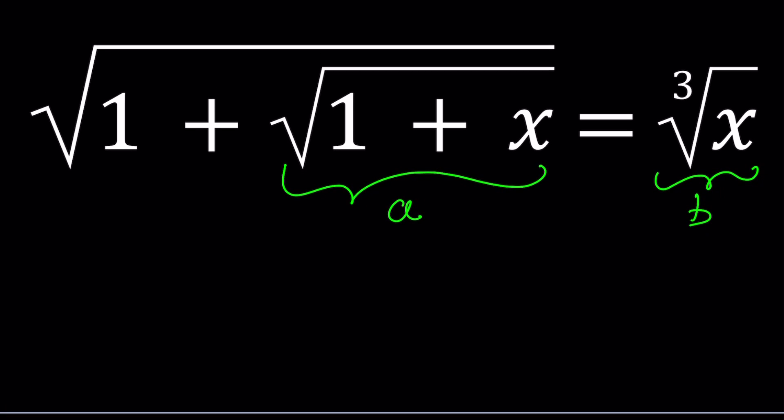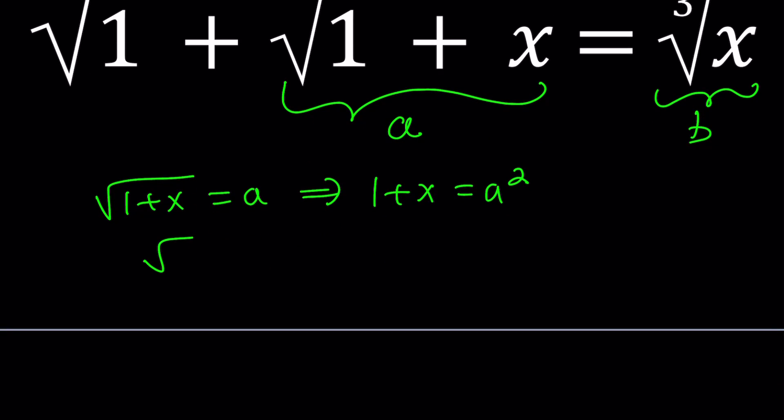So this gives me the following. First, we have square root of 1 plus x equals a, which implies 1 plus x equals a squared. And second, we have cube root of x equals b, which implies x equals b cubed.